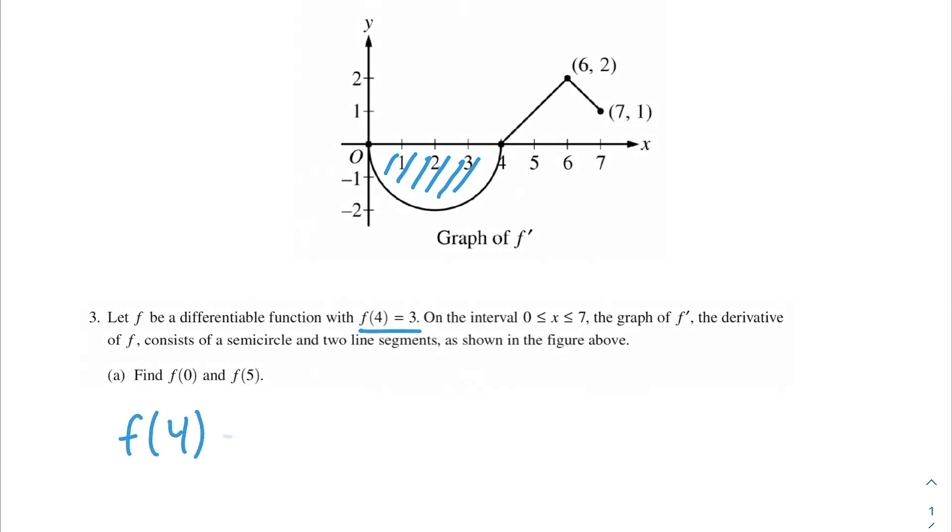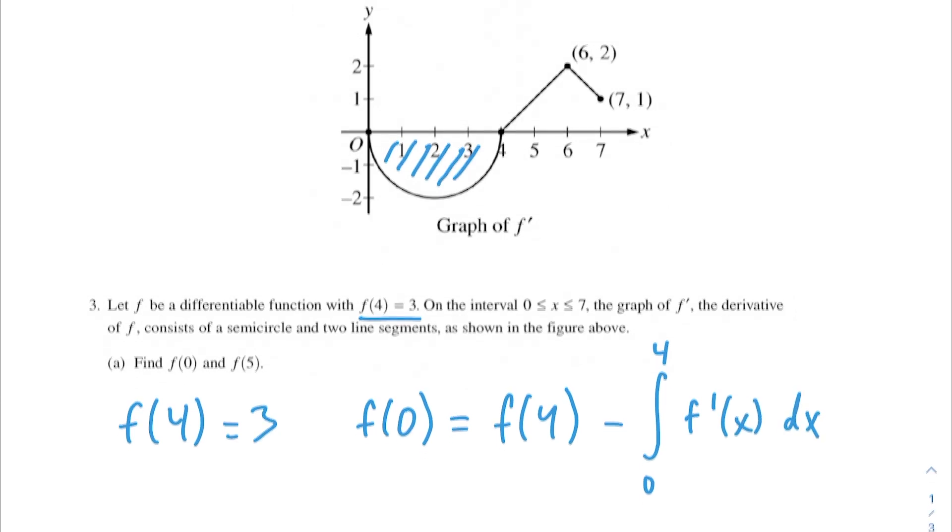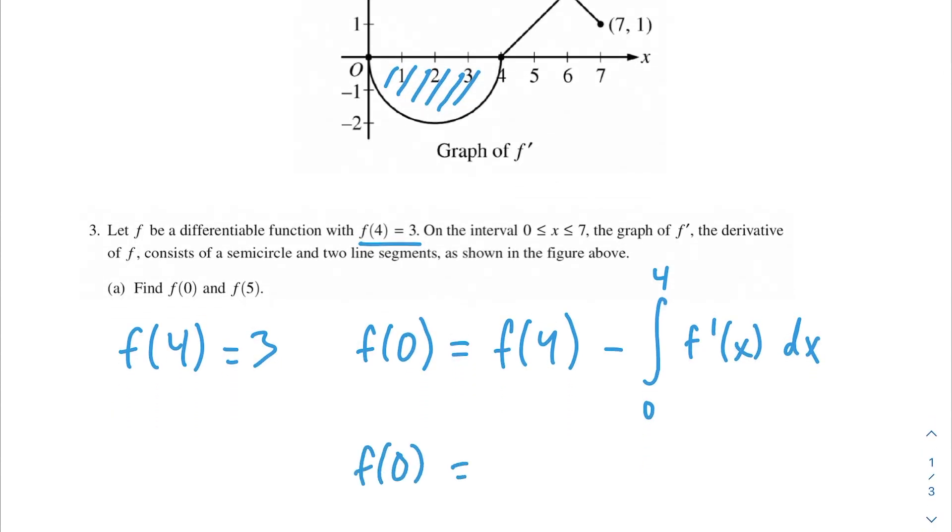We have f(4) = 3. We can find f(0) by starting at f(4) and subtracting this area under the curve from 0 to 4 of f prime of x. So f(0) equals f(4), that's 3, minus area of circle equals πr². It looks like the radius of this circle would be 2, so you would have π times 2², which is 4π. But notice this is only half of our circle, so we're dividing by 2 to get 2π. Since it's below our x-axis, it would actually be minus 2π.